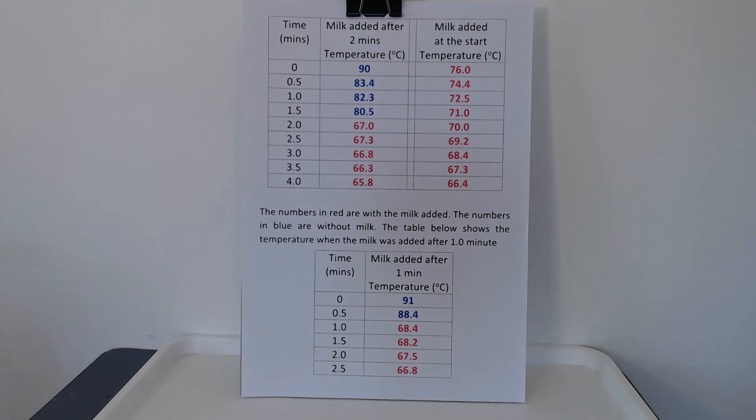The second column represents one where I added the milk at the start. And you see it doesn't fall below 68 until about three and a half minutes into the cooling. So red numbers represent milk in the coffee. The blue numbers represent no milk.